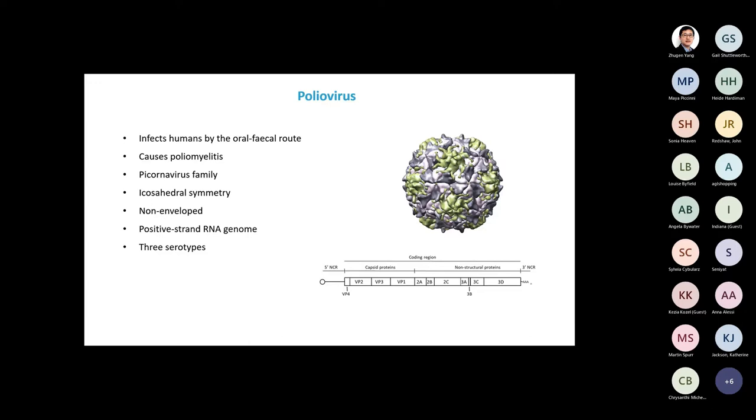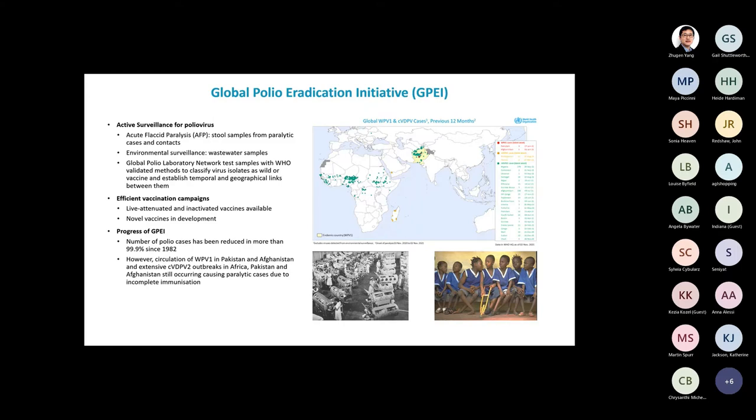A bit on the status of the global polio eradication initiative. Most people think this has finished, but the job has not been finished. It was quite successful during the initial phases — there was a huge rapid reduction in cases — but the program has stalled because of difficulties of immunization in some regions. We have a small but constant number of cases in the last several years. There is active surveillance for poliovirus via acute flaccid paralysis cases, where stool samples are taken from paralytic cases and their contacts.